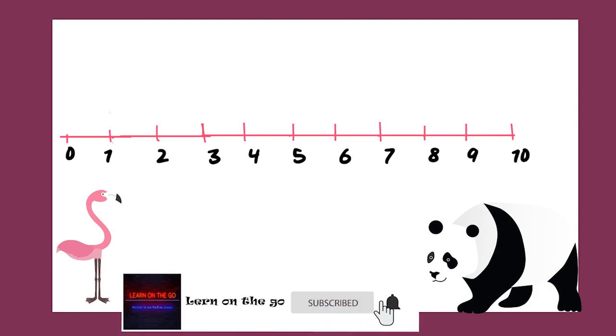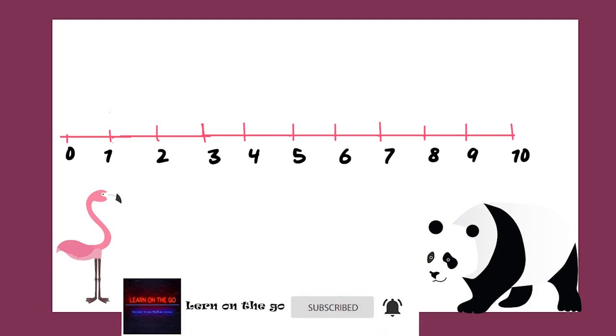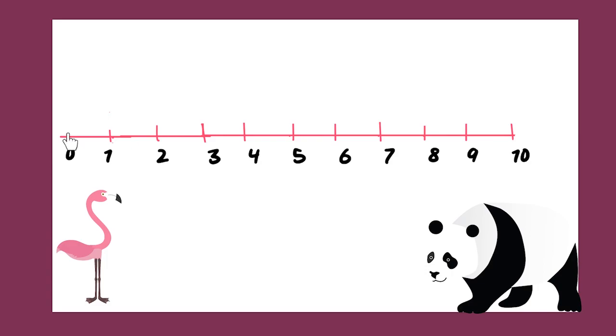When we are subtracting on a number line, do we hop forward or do we hop backward? What do you think? You are here to learn and I am here to teach you. So, when we are subtracting on a number line, we always hop backwards. We are going to hop backward in ones.